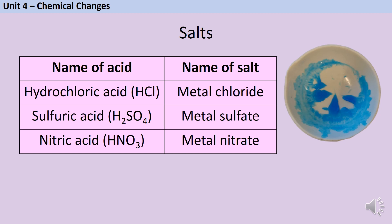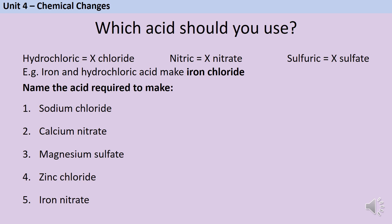You only need to know about these three listed here. Here are some examples of salts and you need to identify which acid you should use to make them. Remember, this is a multiple choice question — you only have three options: hydrochloric acid, nitric acid, or sulfuric acid. Pause the video and quickly write down which acid you should use for each question.